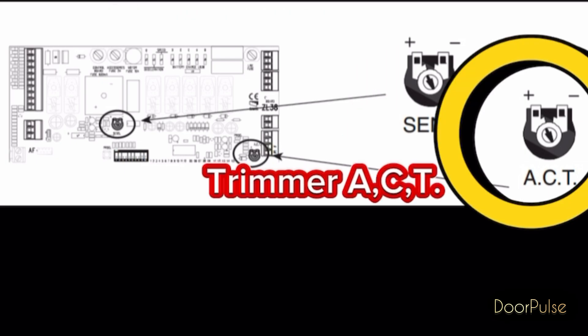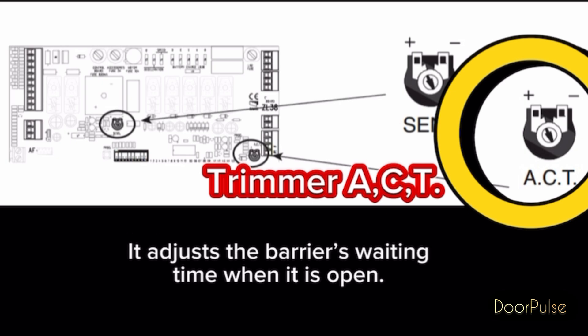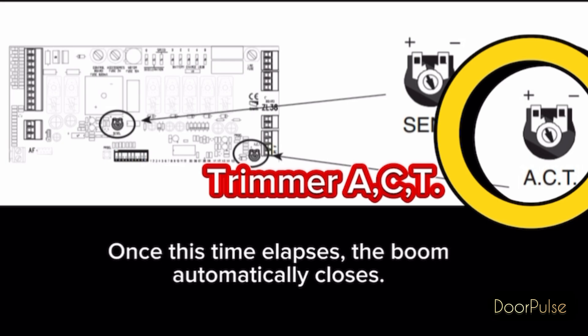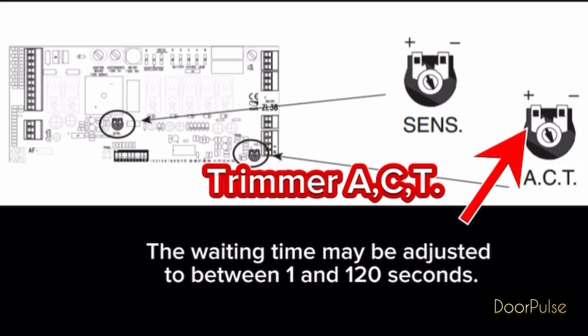Trimmer A-C-T, automatic closing time. It adjusts the barrier's waiting time when it is open. Once this time elapses, the boom automatically closes. The waiting time may be adjusted to between 1 and 120 seconds.